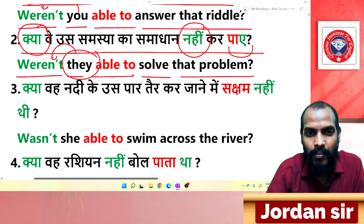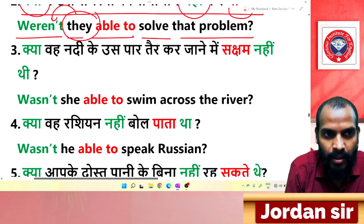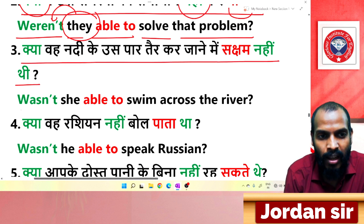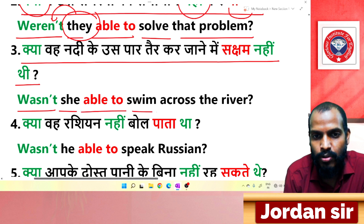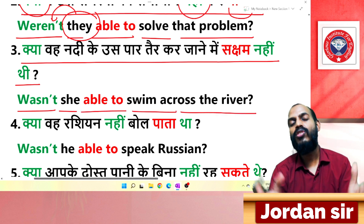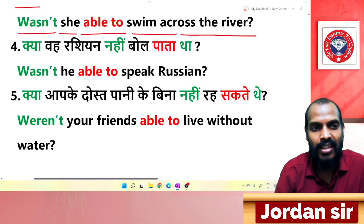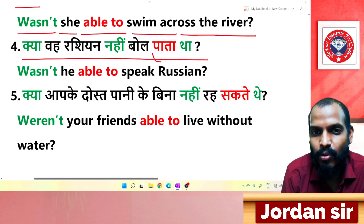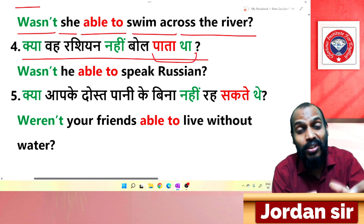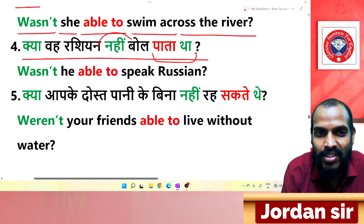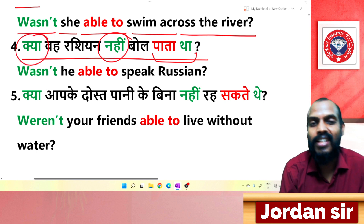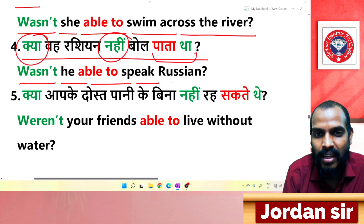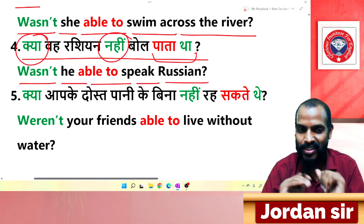Next sentence: It shows a past habit, is negative, and is interrogative. Translation: 'Wasn't he able to speak Russian?' Wasn't he able to speak Russian?